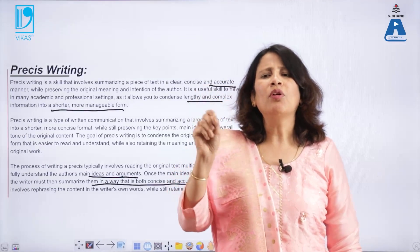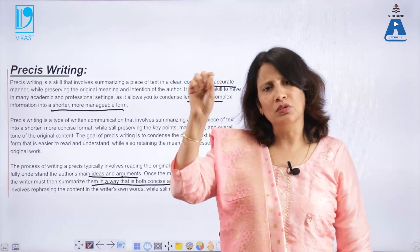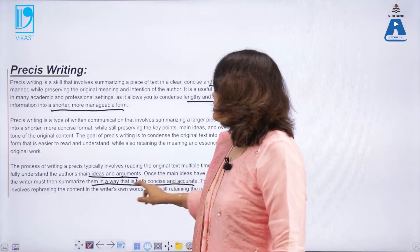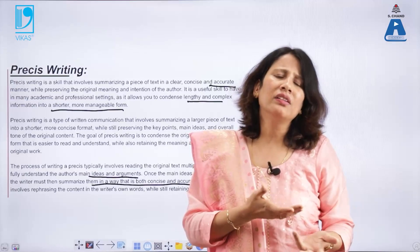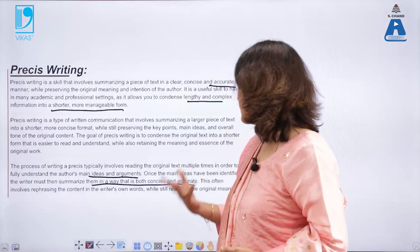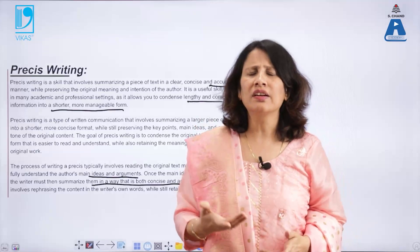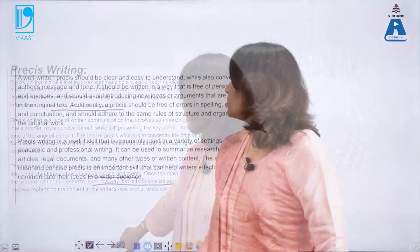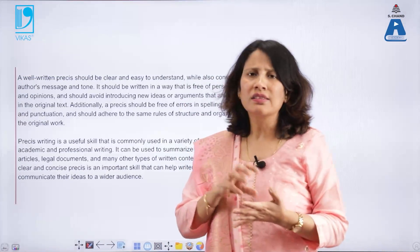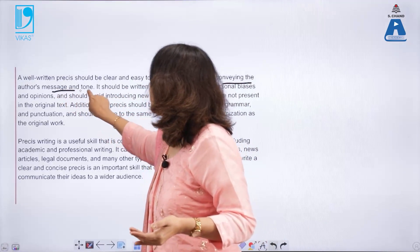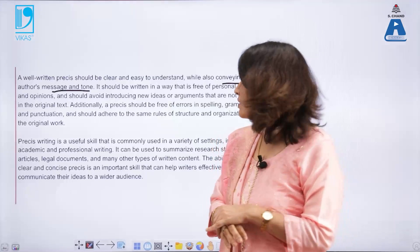Take a pen, note down and mark the important points, make a rough sheet, and write down the key points there. Then you can rephrase the content in the desired length. This process of Précis writing involves reading the original text multiple times, rephrasing the content in your own words, making notes, and then retaining the original meaning. You cannot add anything new of your own. A well-written Précis should be clear, concise, precise, brief, and easy to understand while conveying the author's message and tone.